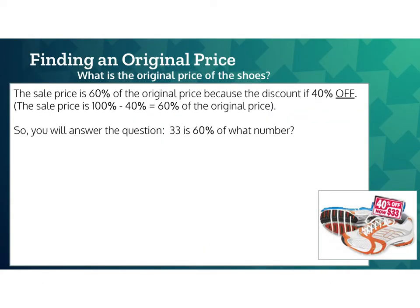In example two, we're not finding the sale price — we're given the sale price and want to find the original price. The question asks: what is the original price of the shoes? From the price tag, the shoes are now $33 after a 40% discount. That means the sale price of $33 is 60% of the original price.